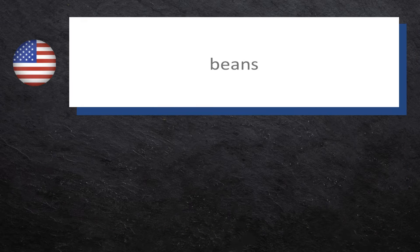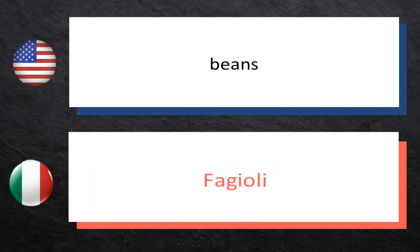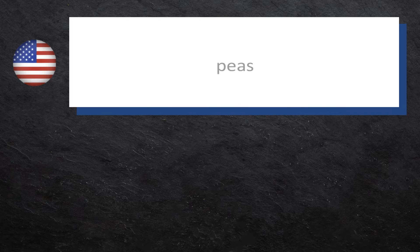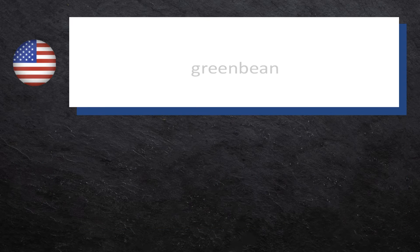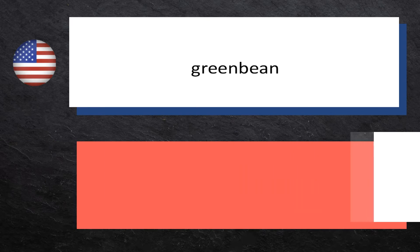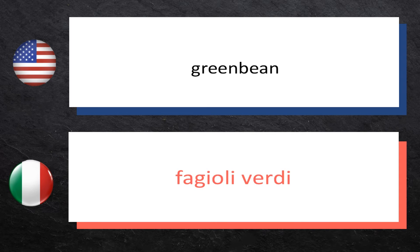Beans — Fagioli. Fagioli. Peas — Piselli. Piselli. Green Bean — Fagioli verdi. Fagioli verdi.